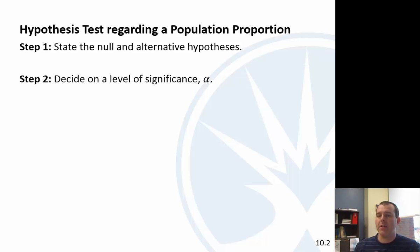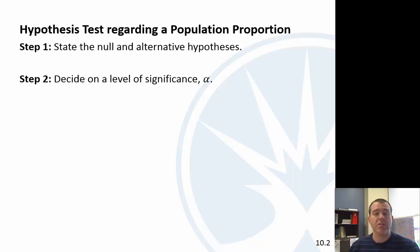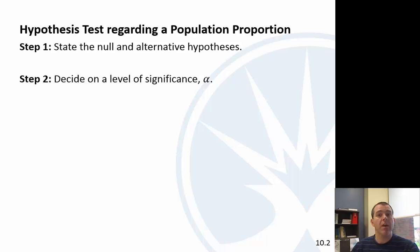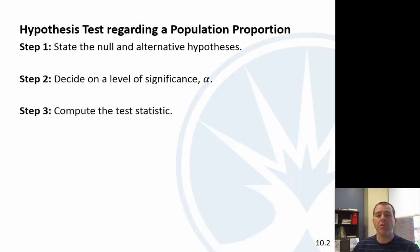Usually in homework and on tests this probability is given to you, but in practice as a researcher you have to decide yourself. For academic research, 5% is a pretty typical threshold. In medical research or other areas where the consequences of making a mistake are really important, you might change that level of significance.